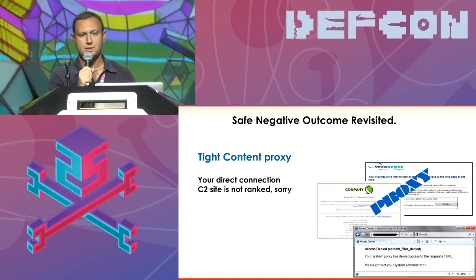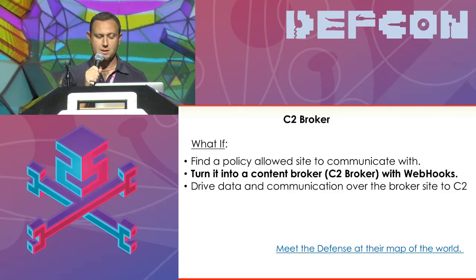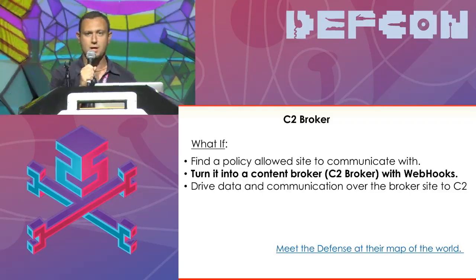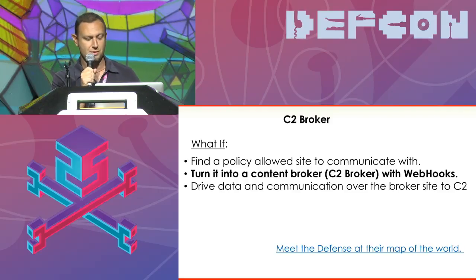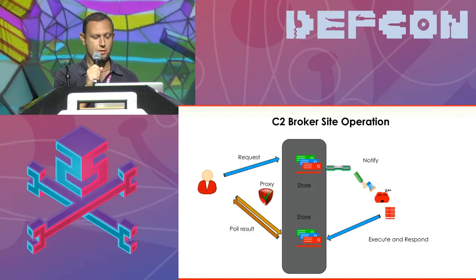In the safe negative outcome, we are sitting tight and have no way to get out except through the content proxy. What if we can find a site — a way to turn a site into a content broker that uses webhooks to work content back and forth, unidirectional or even real-time? Then we're going to drive data communication to the C2, and we're sticking to our main goal: meeting defense at their static map of the world. They've created rules, and we're working through the rules.